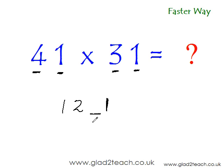is again very simple. You just have to do the rainbow multiplication. What is rainbow multiplication? You just find the product of the outside digits and add to that the product of the inside digits. So 4 times 1 is